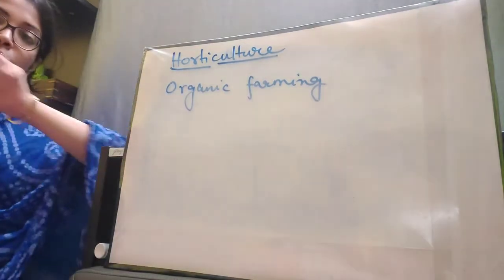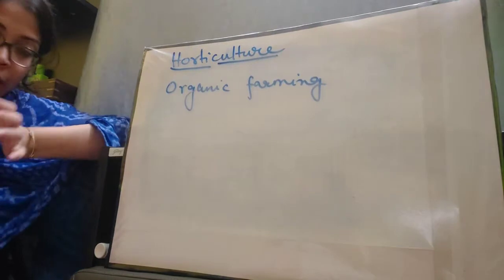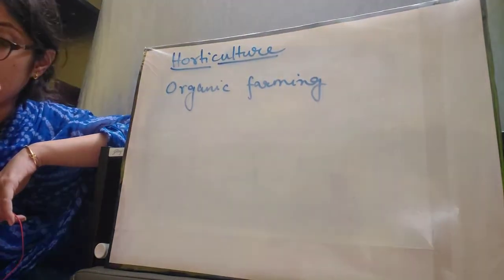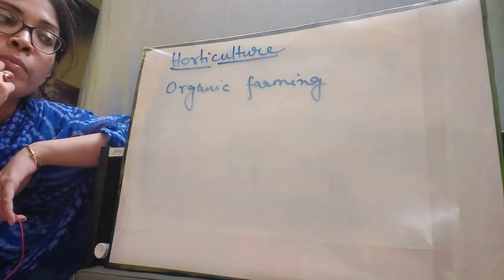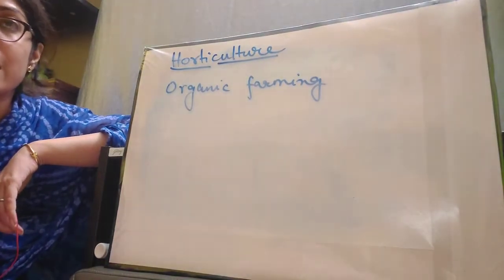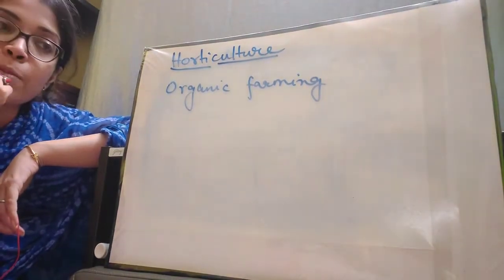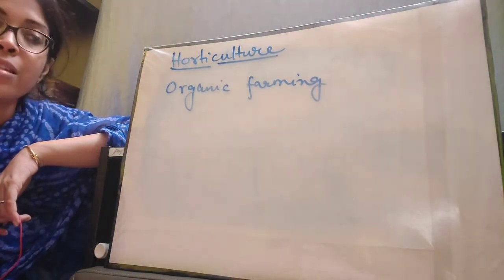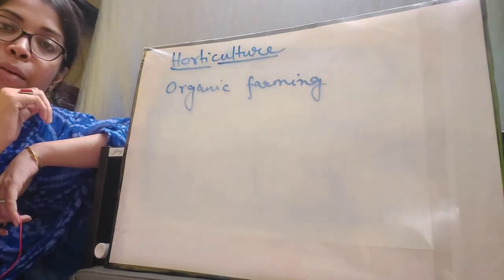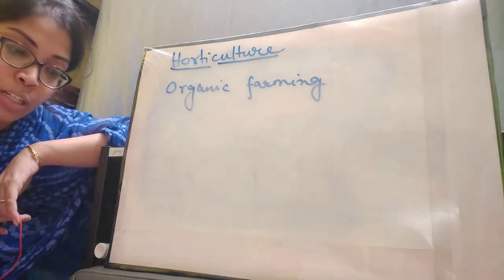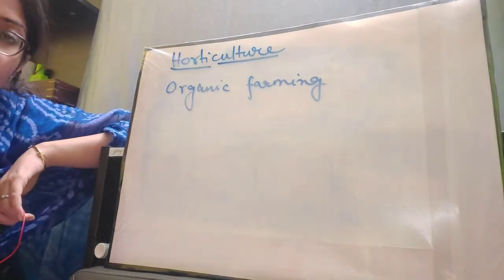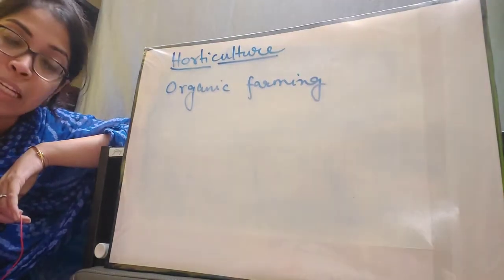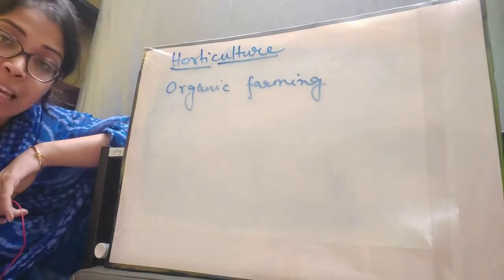Now we are done with bio-fertilizers and the advantages of organic farming. Next we are going to talk about the disadvantages of organic farming. Till now I was talking about the different advantages — why it is beneficial and why it is good — but everything has two sides, everything has pros and cons. So till now we have been discussing the pros or the advantages of organic farming; now let's talk about what are the disadvantages of organic farming.